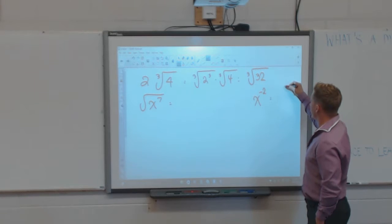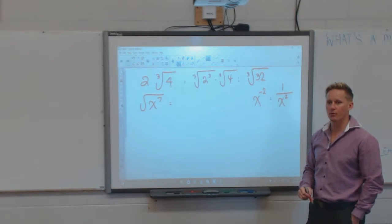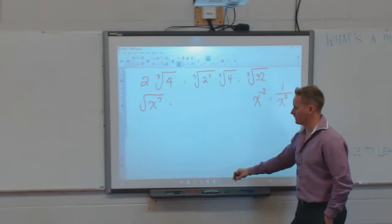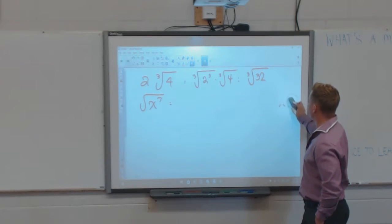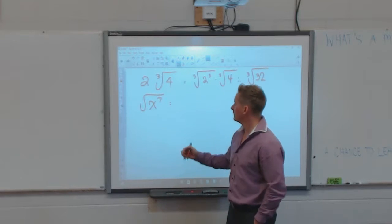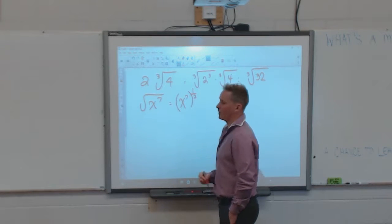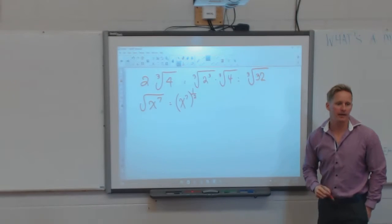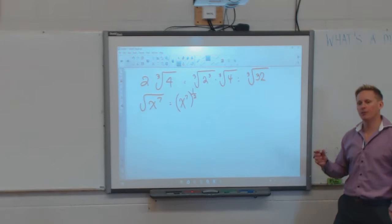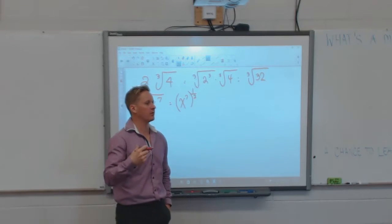Remember: x to the negative 2 is like saying 1 over x squared — that's not going to work for us. The square root can be written as an exponent to the 1/2. The cube root can be written as the exponent 1/3. The fourth root can be written as the exponent 1/4.